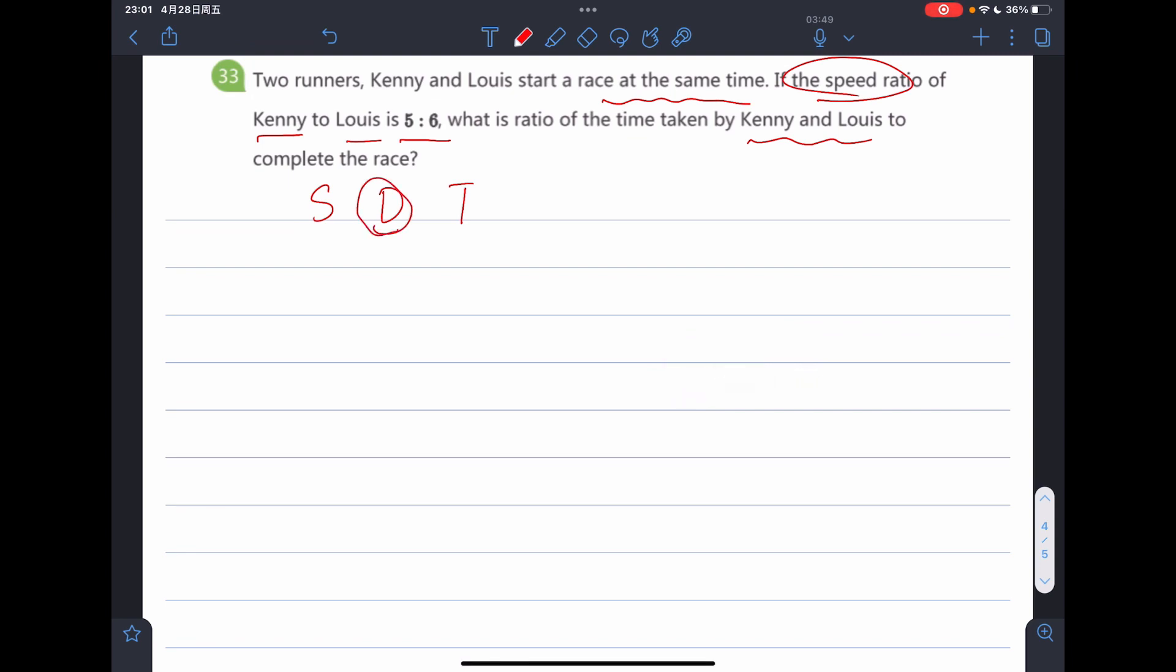Distance, right? Because they need to complete the race and the length of the race is fixed. And we can write down the basic equation.